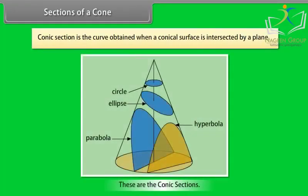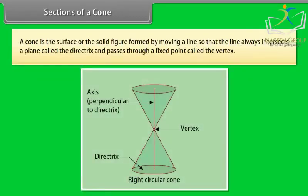Sections of a cone: A conic section is the curve obtained when a conical surface is intersected by a plane. A cone is the surface or solid figure formed by moving a line so that it always intersects a plane called the directrix and passes through a fixed point called the vertex.